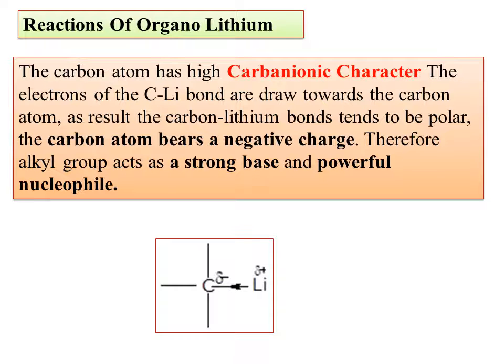Regarding the reactions of organolithium: the carbon atom has a high carbanionic character. The electrons of the lithium-carbon bond are drawn towards the carbon atom. As a result, the lithium-carbon bond is polar — carbon carries a partial negative charge and lithium carries a partial positive charge. This is exactly similar to Grignard reagent, where magnesium plays the role that lithium plays in organolithium compounds.